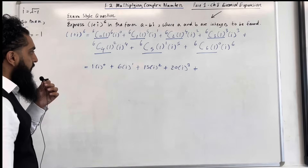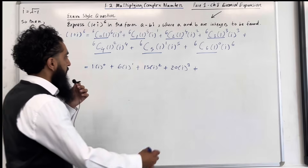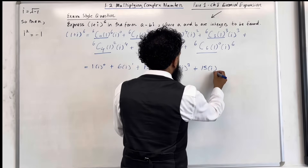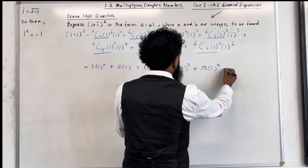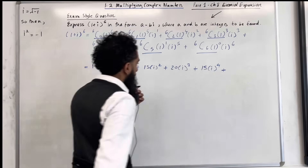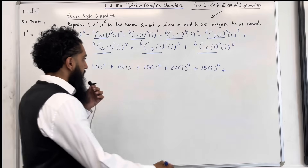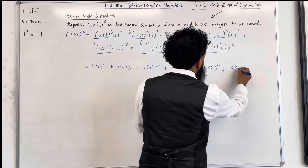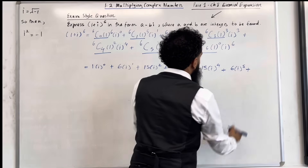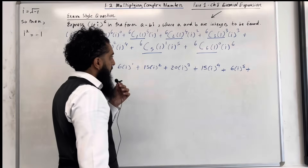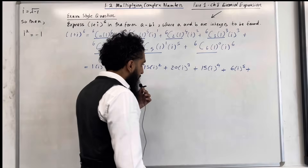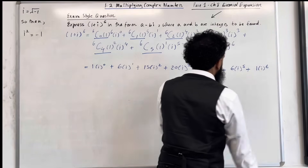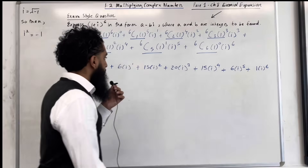And then we have 15 lots of i to the power 4, followed by 6 lots of i to the power 5, plus the final term becomes 1 lots of i to the power 6.